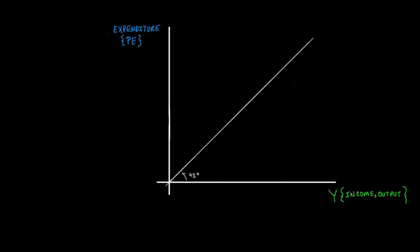To describe the diagram: on the vertical y-axis we have expenditures, measured in something like billions of dollars, labeled PE for planned expenditures. On the horizontal x-axis we have Y, which is national income and also output. Referencing back to the circular flow diagram, output comes from factors of production, turns into income in the factor market, and flows into households. The only other key feature is the 45-degree reference line, which shows all points where expenditures equal income — all the potential equilibrium points.